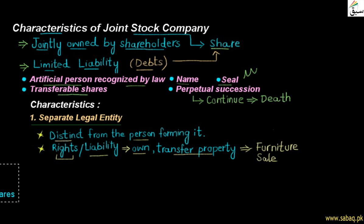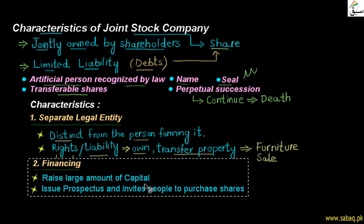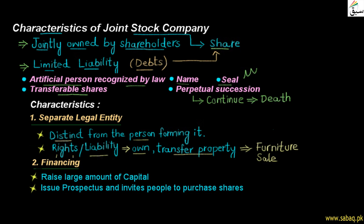After that, the second feature: the joint stock company can raise a large amount of capital, which allows it to expand its own business. The company issues a prospectus. The prospectus has all the details related to shares, shareholders, and the management directors who are running the company. All this information is issued through the prospectus so that investors are attracted to invest their amount in the company.